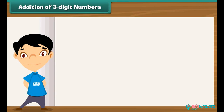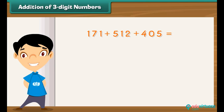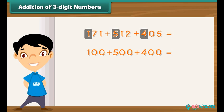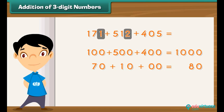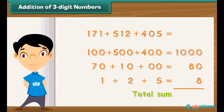Let us try and add 171, 512 and 405. To simplify the addition, we proceed according to place values. We begin with the hundreds place digits: 1, 5 and 4. We add 100, 500 and 400 to get 1000. Next, we add the tens place digits: 70, 10 and 00 to get 80. Finally, we add the ones place digits: 1, 2 and 5 to get 8. Adding 1000, 80 and 8 gives the result 1088.